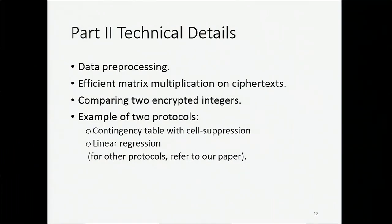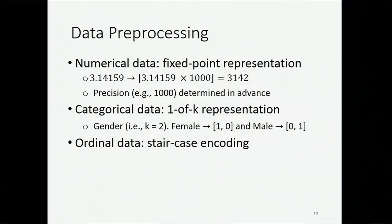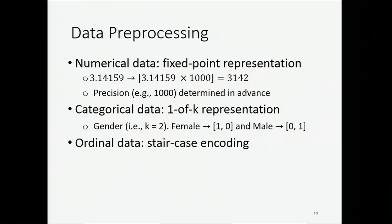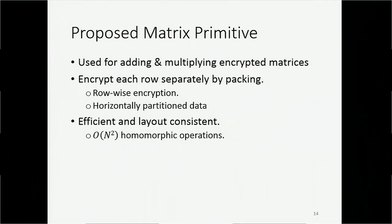Now I will talk about our proposed primitives and protocols. In our research we have three types of data. For numerical values, we transform to fixed-point values, so we have to determine the precision in advance. For categorical values, we use the one-of-k representation — for example, we encode female as vector [1, 0] and male as vector [0, 1]. We have a third type, ordinal data, but we skip that today. The first proposed primitive is used to do addition and multiplication on encrypted matrices. We try to encrypt each row of the matrix separately, so we are thinking about horizontally partitioned data. This primitive is efficient and layout consistent, which we will come back to in the next slide.